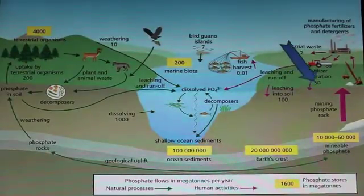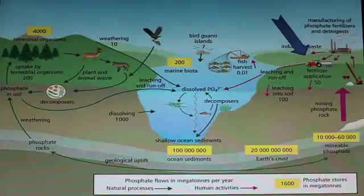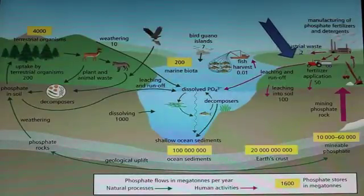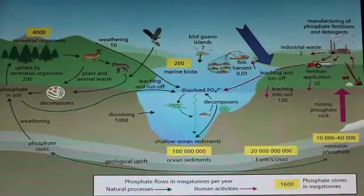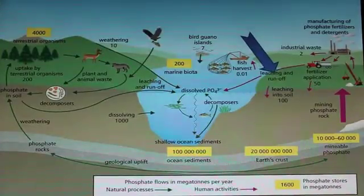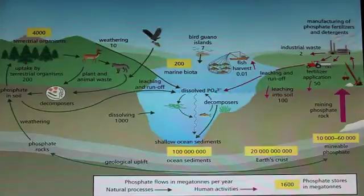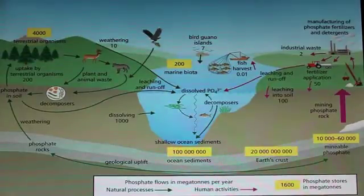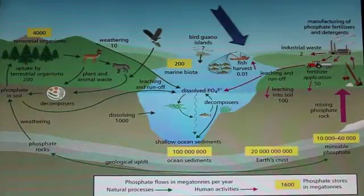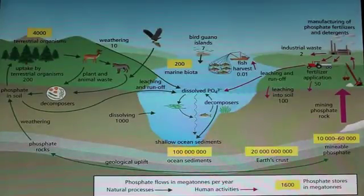Humans change this balanced cycle most predominantly by mining phosphate rock. The application of fertilizers using mined phosphate are carried by runoff into bodies of water and are also leached into soil, adding excess of this nutrient to stores that cannot hold it. Some other human processes such as industrial waste and fish harvesting also affect the natural cycle.